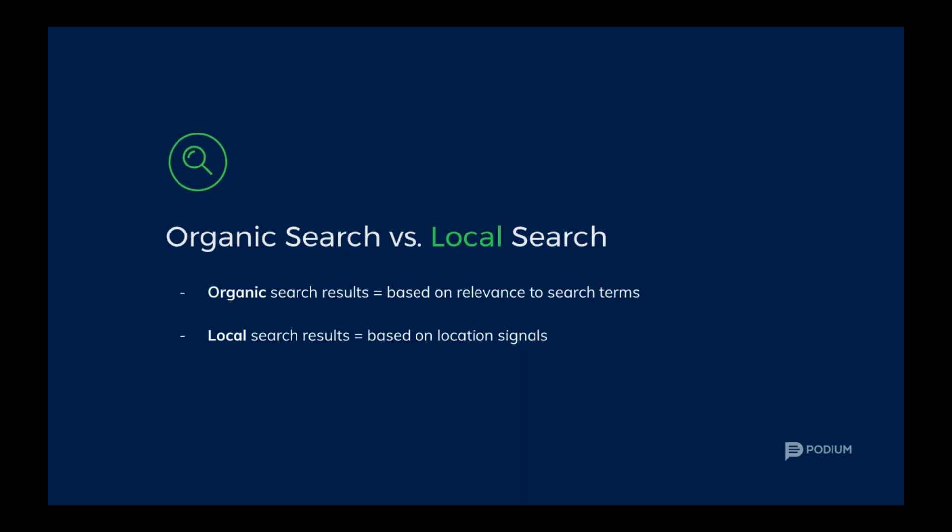Local search results, on the other hand, take into account what you were searching for and where you were searching from. Once you make the query, Google will look into its database of business listings and return the most relevant businesses that are also the closest to where the search was performed. For example, if you searched for 'Honda Odyssey near me,' the map pack will pop up a number of different dealerships that sell that particular type of vehicle. It's important to optimize for both, but today we're going to focus on what your business needs to do to optimize for local search.